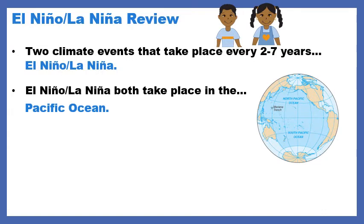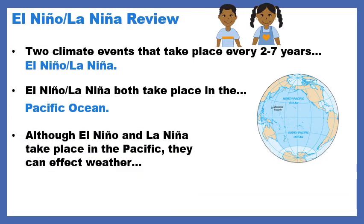Now remember, we in Buffalo, New York are not located anywhere near the Pacific Ocean. It is on the opposite coast of the United States — it's on the west coast, we are on the east coast. Although El Niño and La Niña take place in the Pacific, they can affect weather around the world. If you said around the globe or globally, those are all fine answers. As long as they make sense, it doesn't matter if they're not word for word.